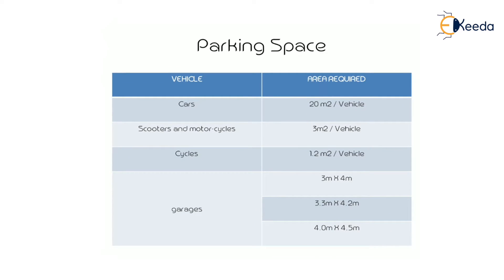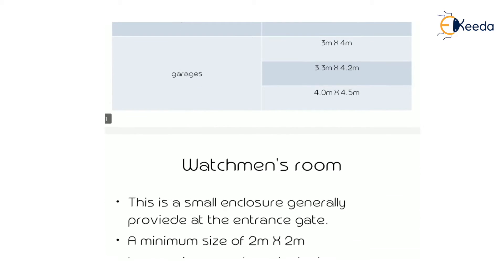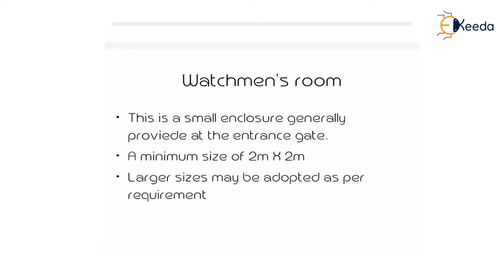For a car, the parking area required is 20m² per vehicle. For a scooter or motorcycle, the area required is 3m² per vehicle. For a cycle, the area required is 1.2m² per vehicle. Garage sizes are 3m×4m, 3.3m×4.2m, or 4m×4.5m. The watchman room is a small enclosure generally provided at the entrance gate; its minimum size is 2m×2m, and a larger size may be adopted as per requirement.